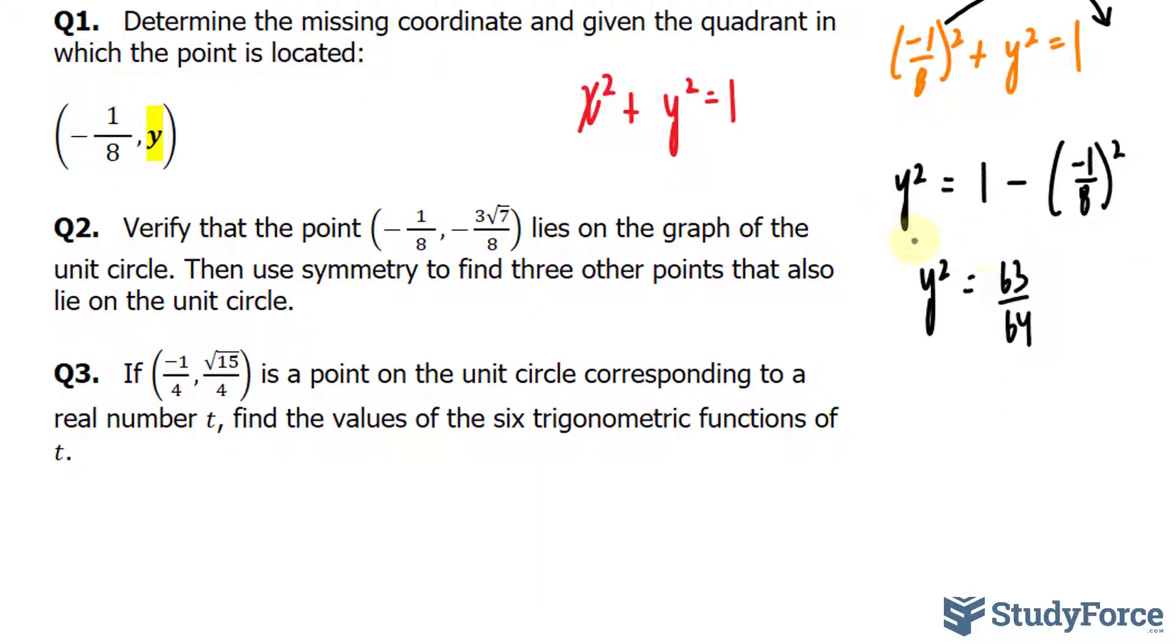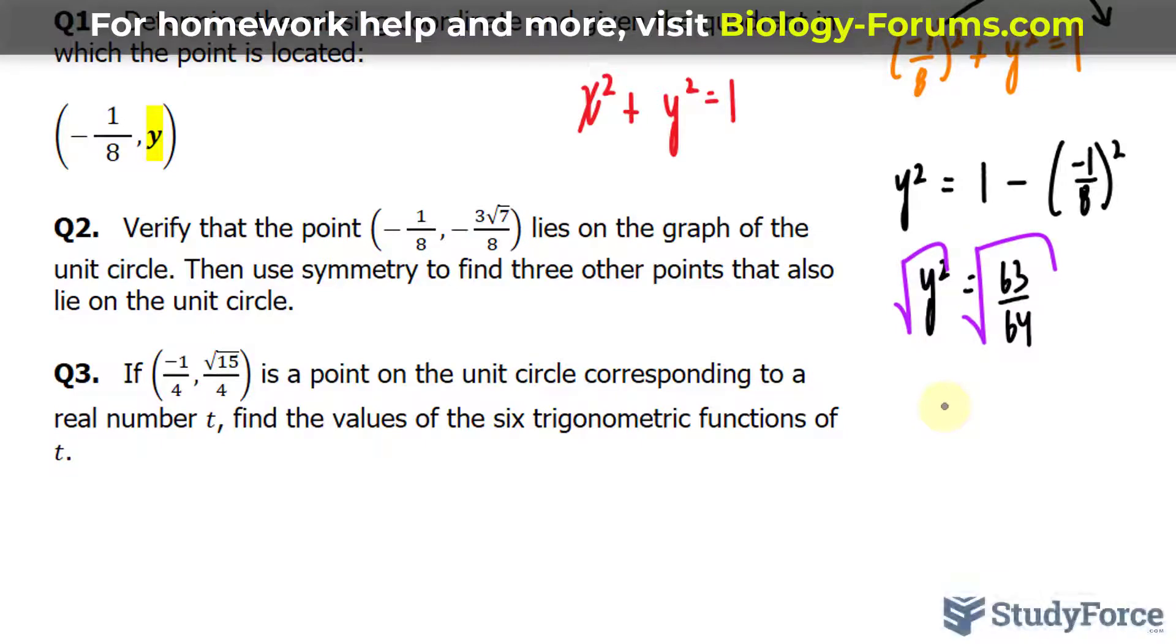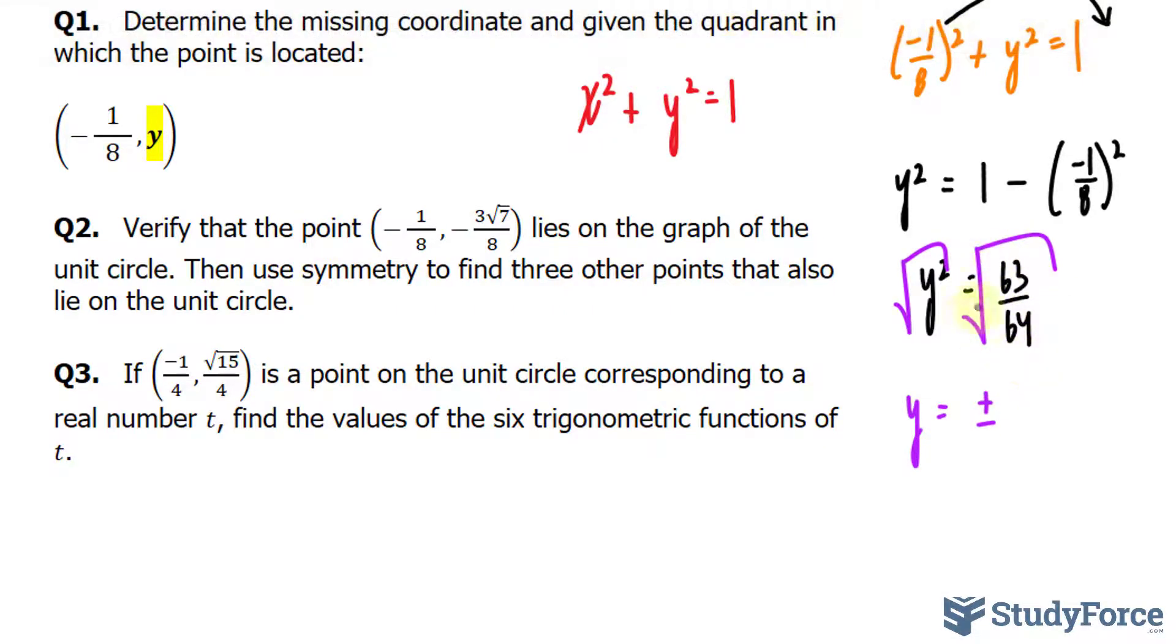I'm not done yet. I need to square root both sides. And when you square root both sides, you end up with a plus minus outcome. So just keep that in mind. We have plus minus whatever that is. I'll distribute the square root to the top, where I have the square root of 63, over the square root of 64 is 8.